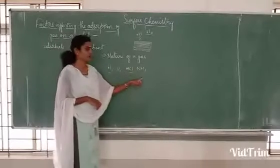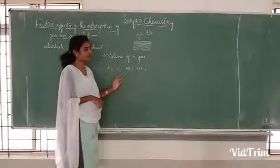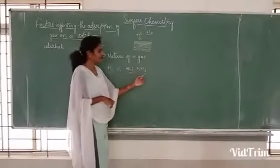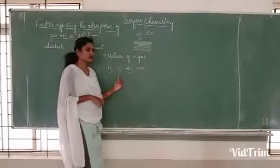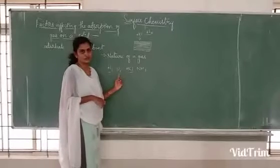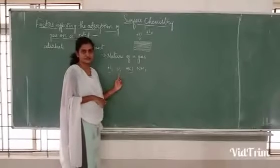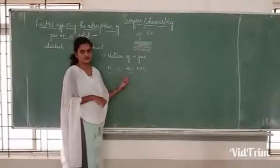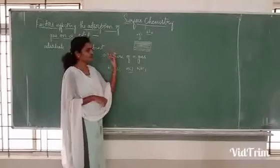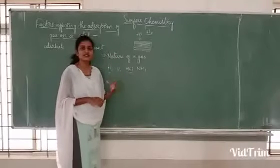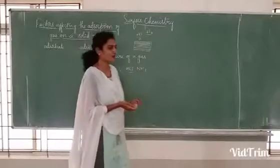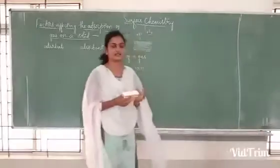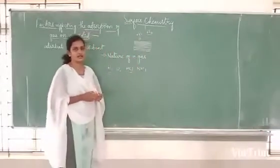Similarly, compare oxygen and ammonia. Ammonia has a molecular mass of 14 plus 3, which is 17, whereas oxygen is 16 plus 16, which is 32. So which will be liquefied first? Oxygen, because adsorption depends upon molecular mass, and higher molecular mass increases adsorption.